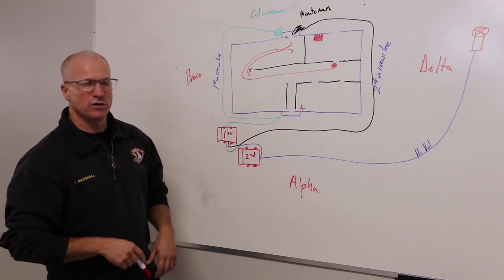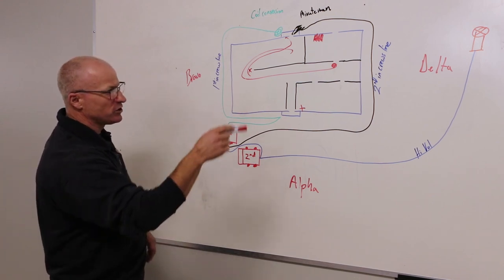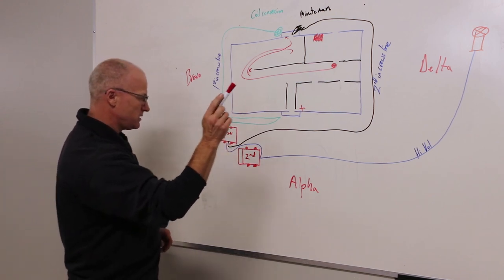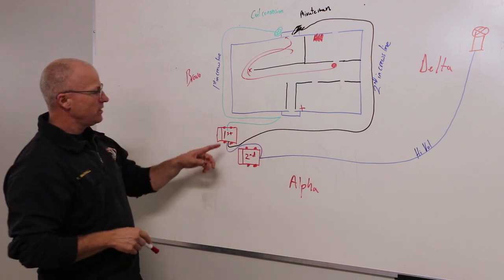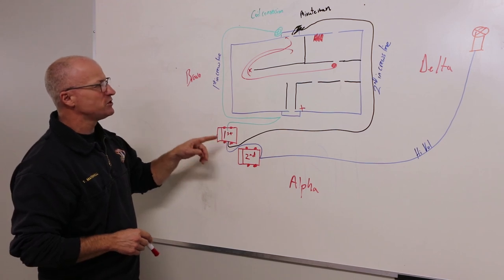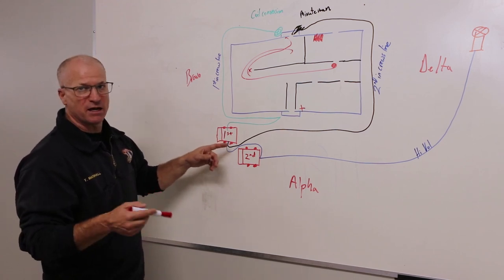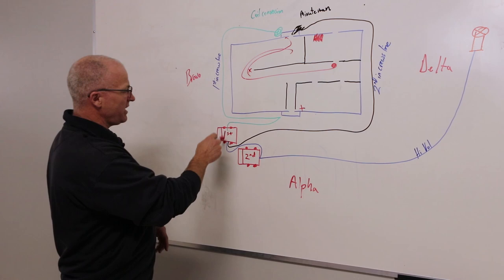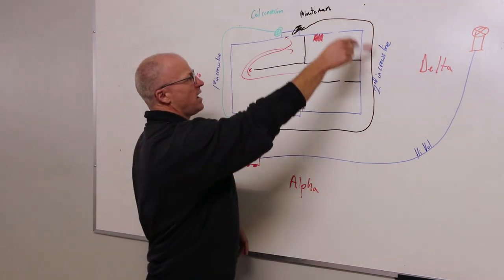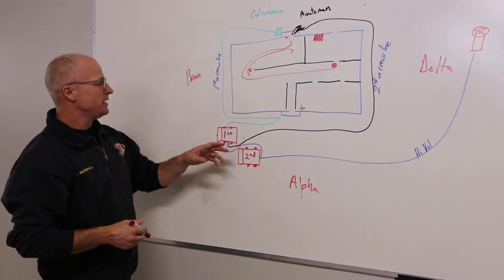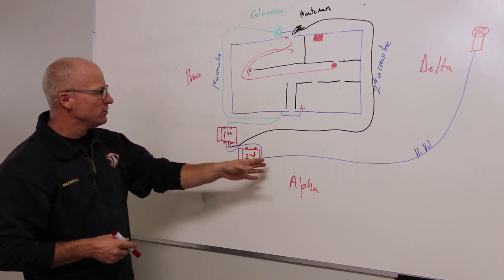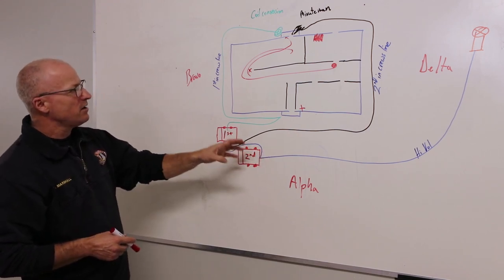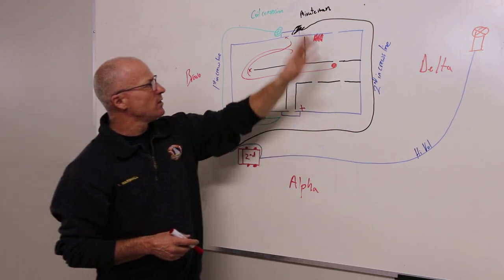When the second in crew comes in their first responsibility is to establish water supply. Once they've established that, then they're going to grab the second line off the first engine, and that's essentially the backup line. So they've taken this line and they've walked around the delta side, but if the engineer is available out of the second engine or maybe it's the third, either way they have a responsibility or could come around back.